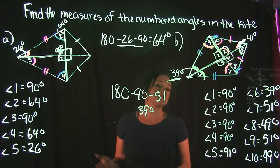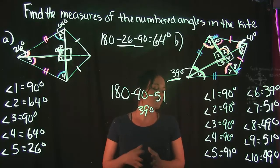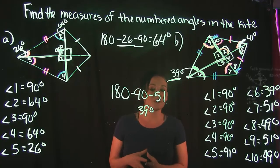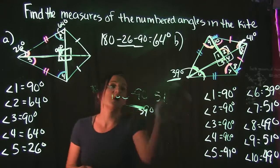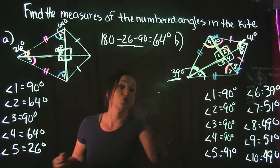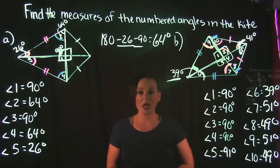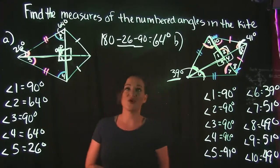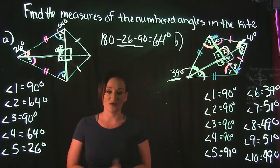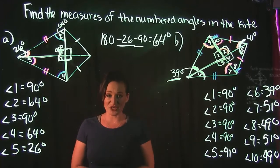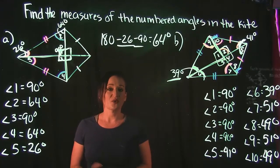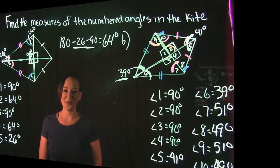You can see there was a lot of missing information at the start, but with just a couple of basic rules about kite shapes, we were able to figure out all the missing angles. And that's it for this video.